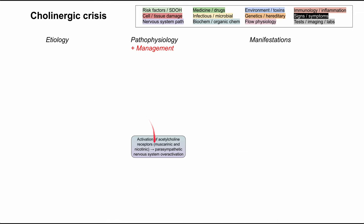At the center of cholinergic crisis is activation of acetylcholine receptors much more than you normally would. Acetylcholine receptors include both muscarinic and nicotinic receptors, and when you activate these, you have over-activation of the parasympathetic nervous system, so you'll have a lot of fluids coming out of the body. This usually happens through irreversible inhibition of acetylcholinesterase, the enzyme that breaks down acetylcholine. Without it, acetylcholine is not broken down, levels rise, and that leads to over-activation of the receptors.